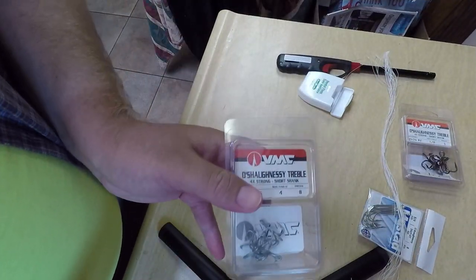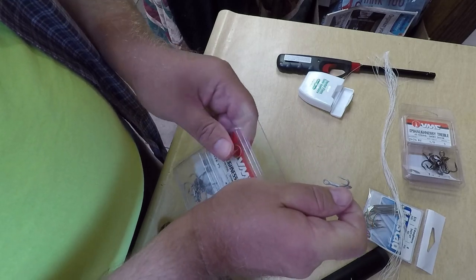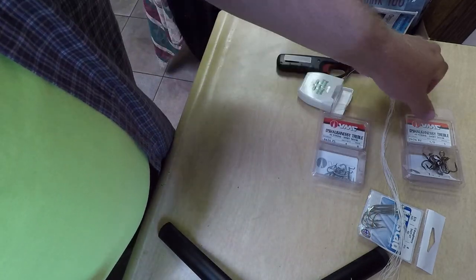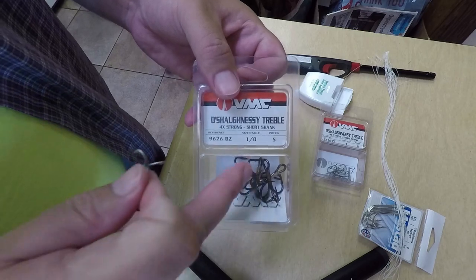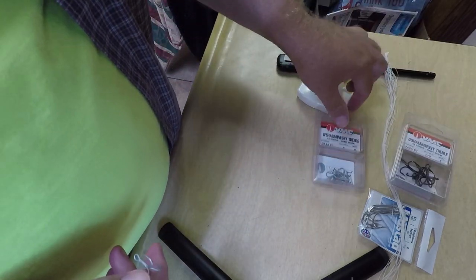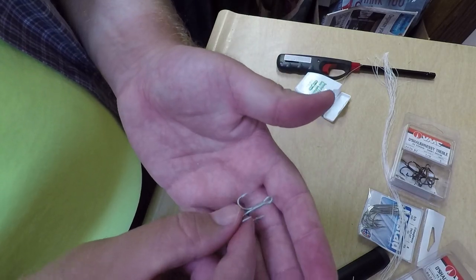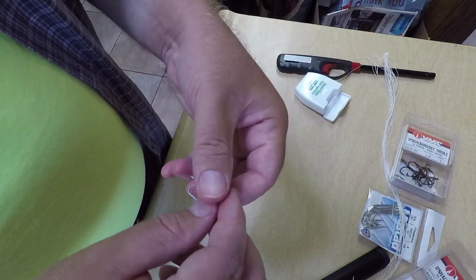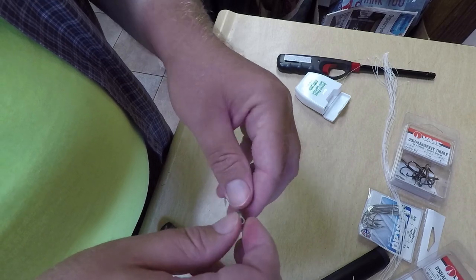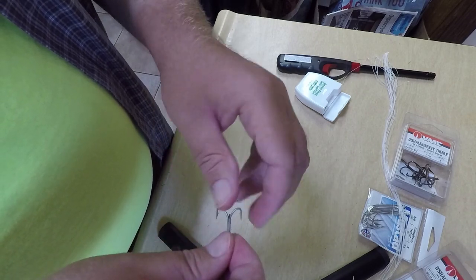I've got these 4X hooks to replace my Lucky Craft ones. This one's going to be for my SP Minnow, a little bit bigger. Also 4X. These are slightly bigger than the hooks on the Lucky Crafts, so I want to kind of go one size up a little bit.